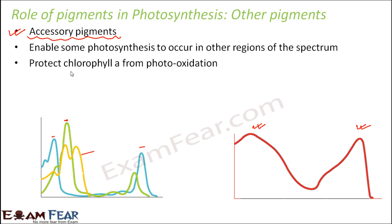The accessory pigments also protect chlorophyll A from photo-oxidation. Since chlorophyll A is the main pigment for photosynthesis, it is very important to ensure its protection. Chlorophyll A has a tendency to get oxidized in the presence of light, so these accessory pigments help protect chlorophyll A from being photo-oxidized. So the other pigments perform two roles: enabling some photosynthesis between the red and blue regions, and protecting chlorophyll A from photo-oxidation.